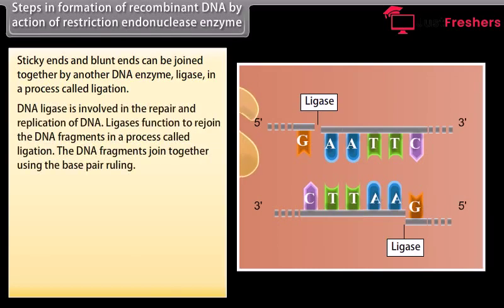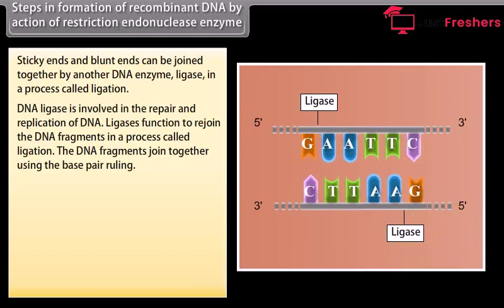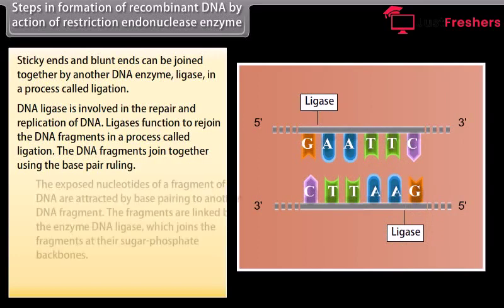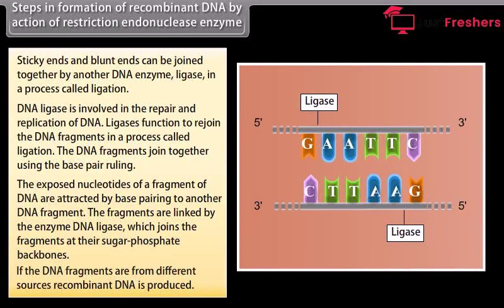Sticky ends and blunt ends can be joined together by another DNA enzyme, ligase, in a process called ligation. DNA ligase is involved in the repair and replication of DNA. Ligases function to rejoin DNA fragments. The exposed nucleotides of a fragment of DNA are attracted by base pairing of another DNA fragment, and the fragments are linked by the enzyme DNA ligase which joins them at their sugar-phosphate backbones. If the DNA fragments are from different sources, recombinant DNA is produced.